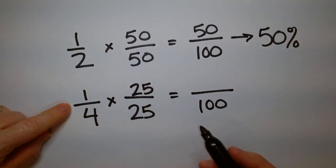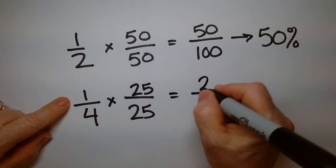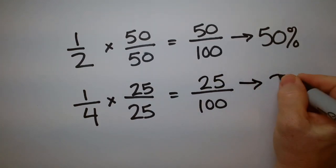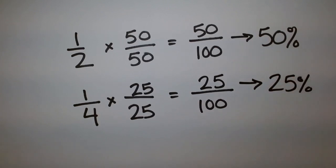25 over 25 is 1. So I can multiply a number by 1 and it's totally legal for me to do that. Because it's over 100, the top is the percent. You see that so far?